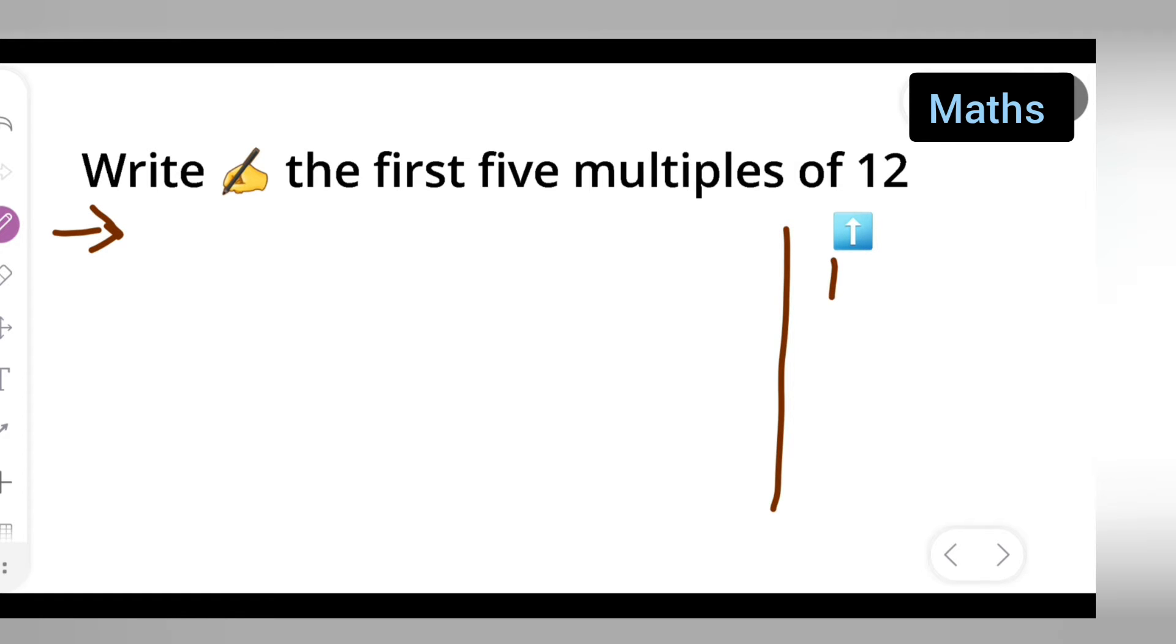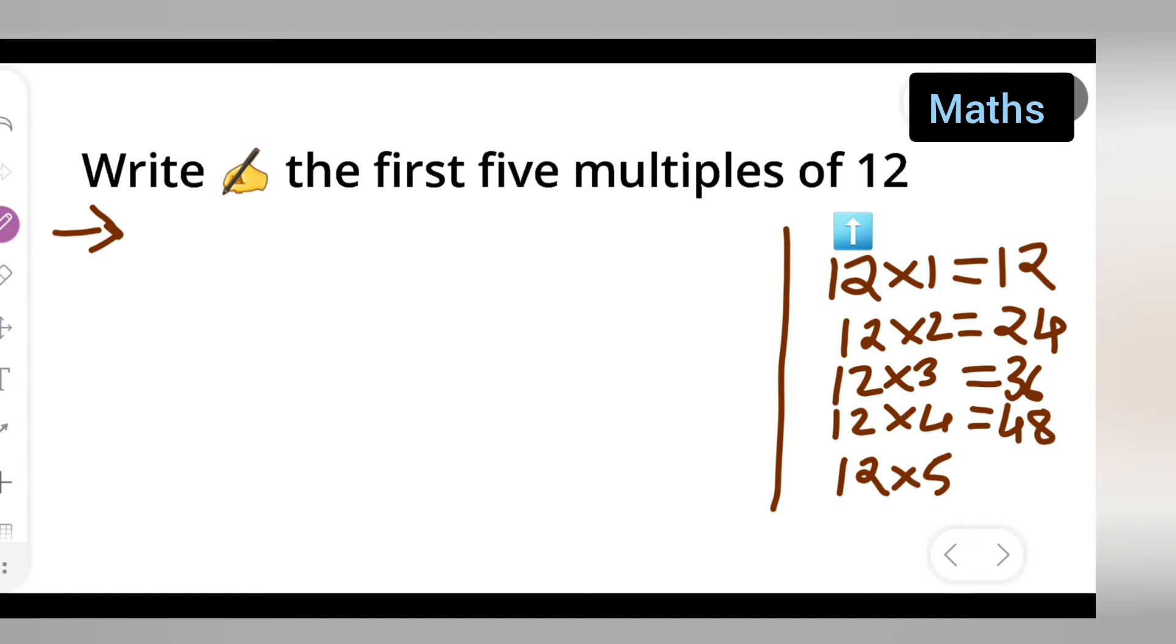Basically, it will be the table of 12. 12 ones are 12, 12 twos are 24, 12 threes are 36, 12 fours are 48, and 12 fives are 60.